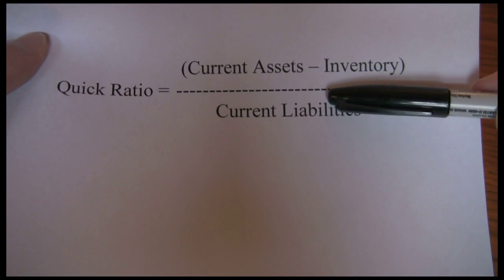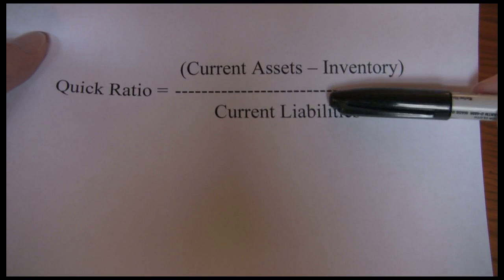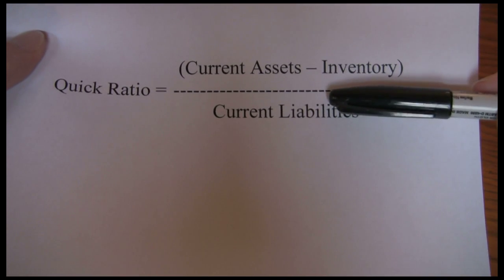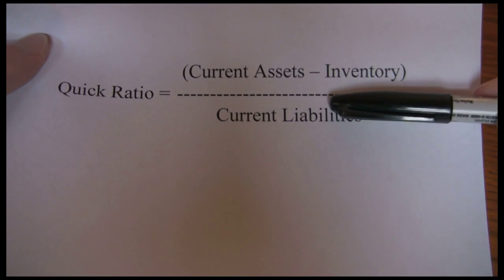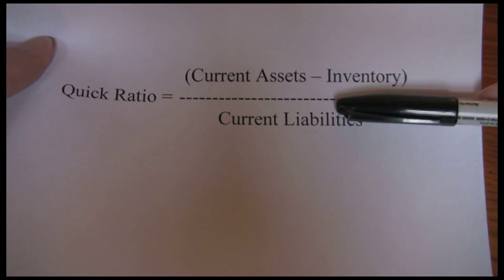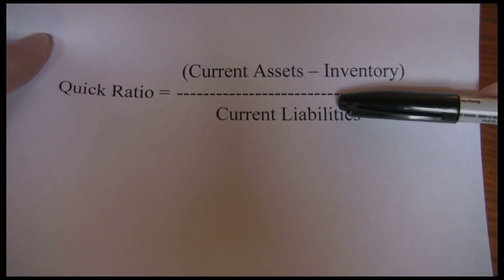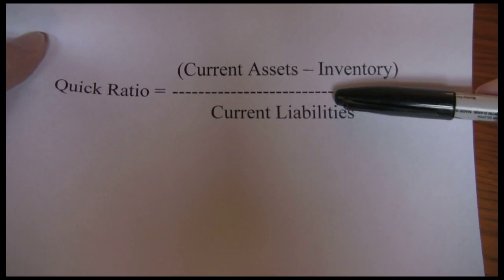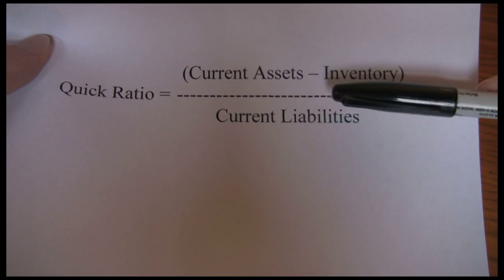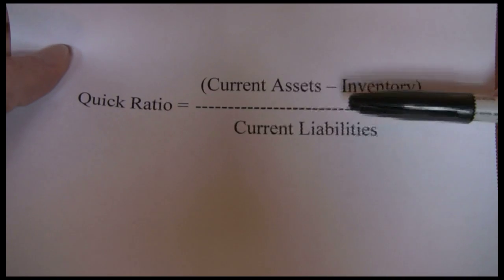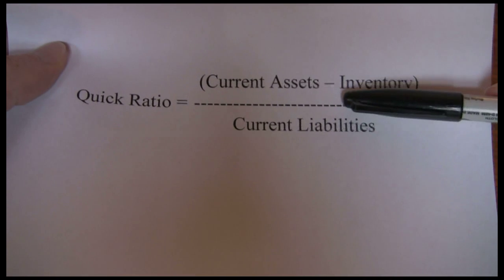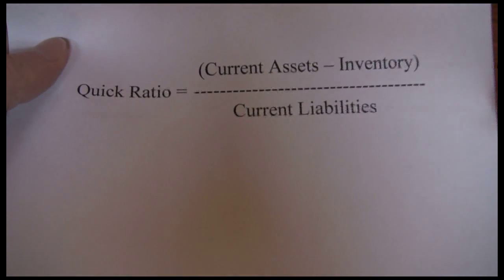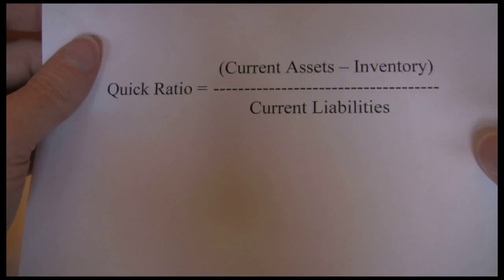To convert inventory to cash, first we have to sell it. For a manufacturing firm, it might be work in process, which means they have to finish it first, then sell it. If they sell it on accounts receivable, they might wait another month or two to collect the sales. So inventory is the least liquid. We pull it out of current assets to see if we still have enough to meet current liabilities. That's our quick ratio.